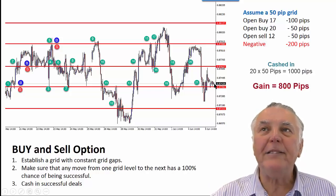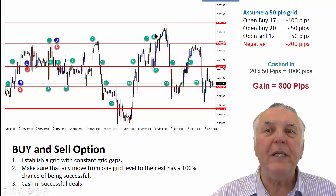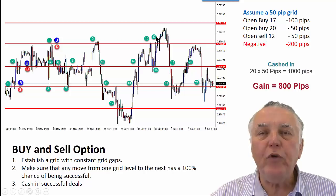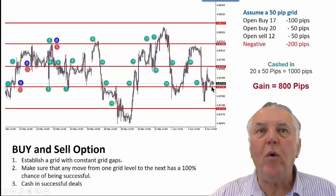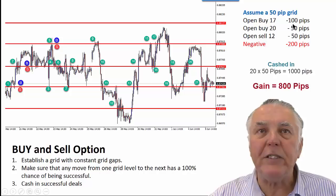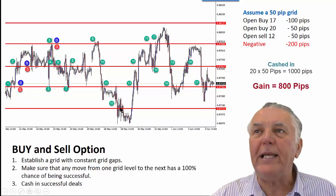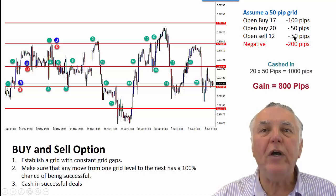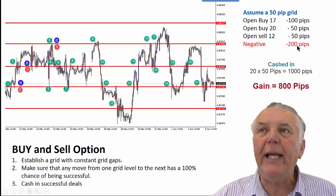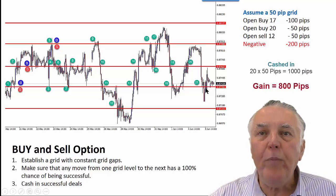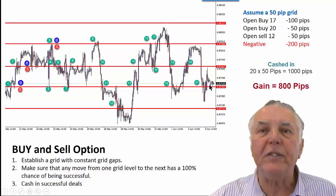What would have happened here is that at the current price, there would be two open buys — buy number 17 and buy number 20 — which have not been cashed in and are still open. Buy 17 would be two times minus 50, and buy 20 would be one times minus 50. At the bottom we've also got sell number 12 still open, which is minus 50. If you add those together, you get a negative of minus 200 for all open deals. The ones at level 21 are a buy and a sell, so they're hedged and don't matter too much.